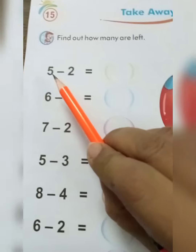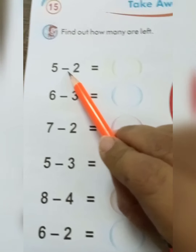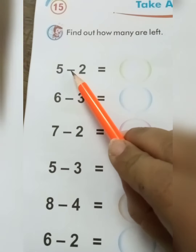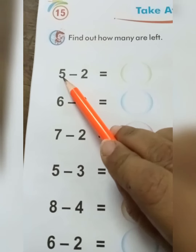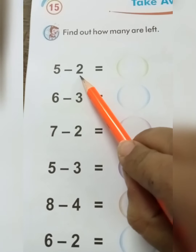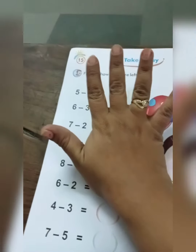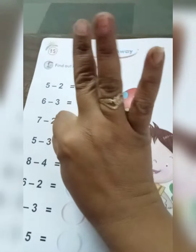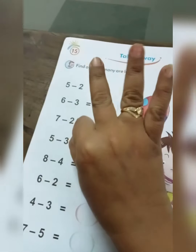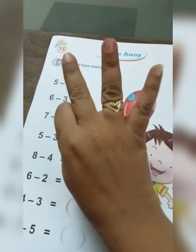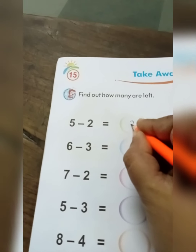Okay, number 1: 5. Which sign? Yes, this is minus sign. 5 minus 2. So students, I teach you — 5 fingers, minus 2. अभी मेरे पास कितने बचे? How many left? 3. Right. So our answer is 3. 5 minus 2 equals 3.